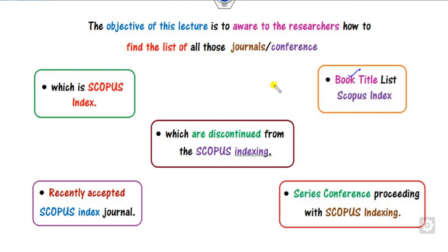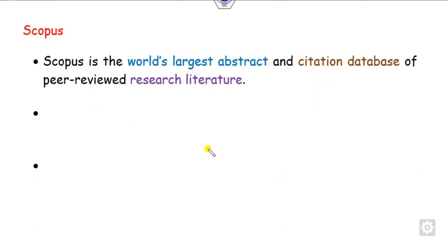So all these five properties we will see in this presentation. Before we start, we must understand what is the importance of Scopus and why every researcher wants their research papers or conferences to be in Scopus indexing.